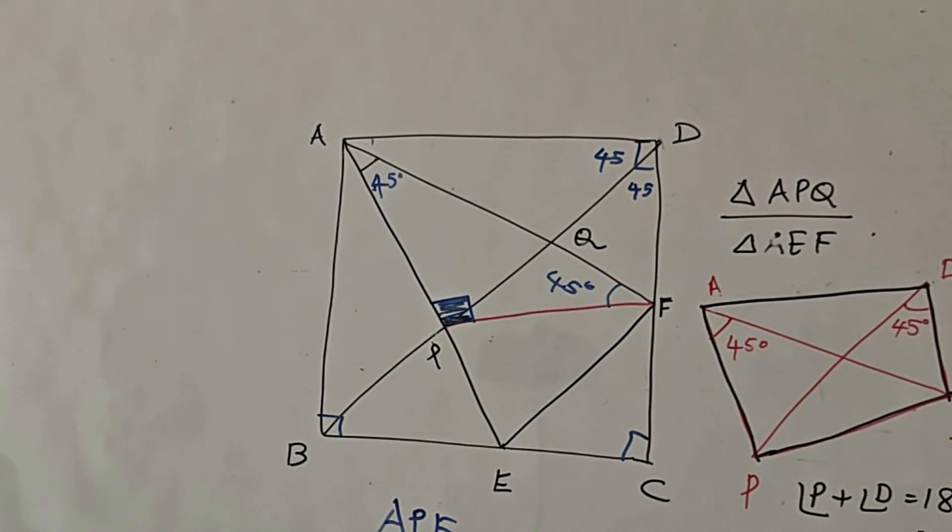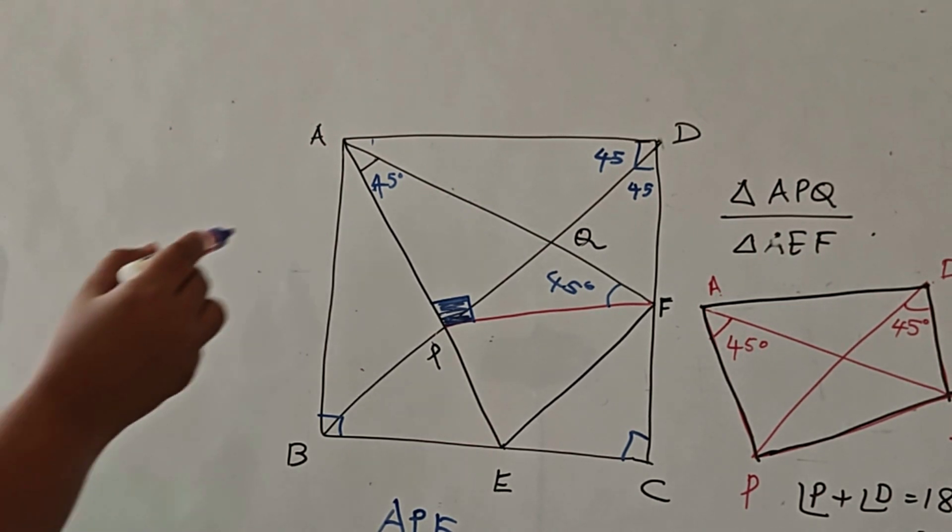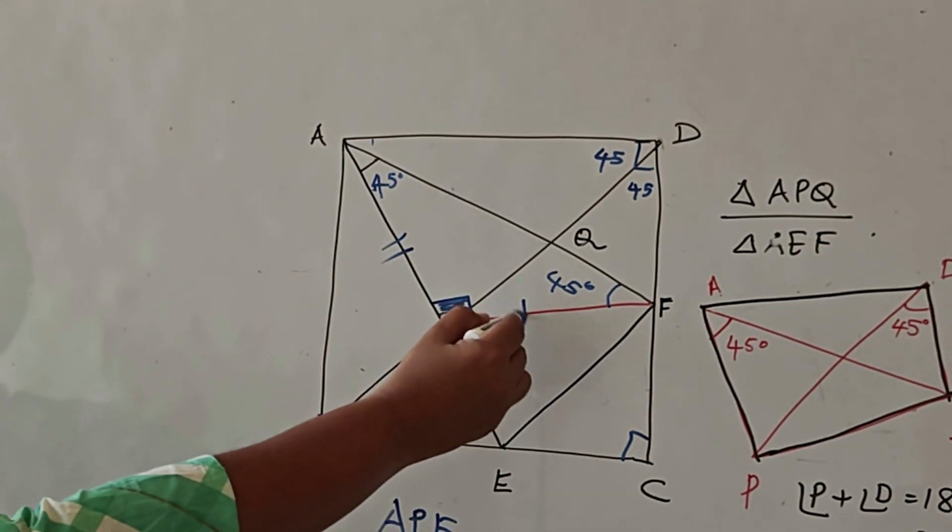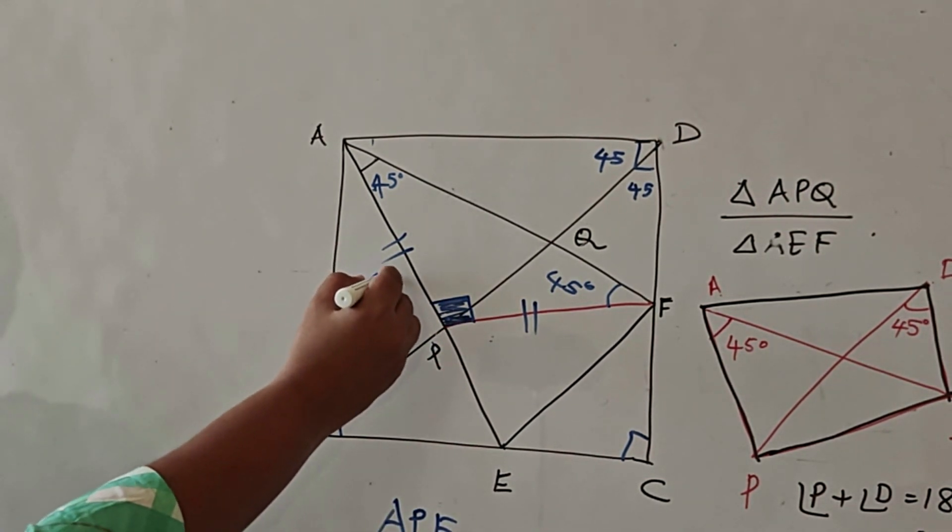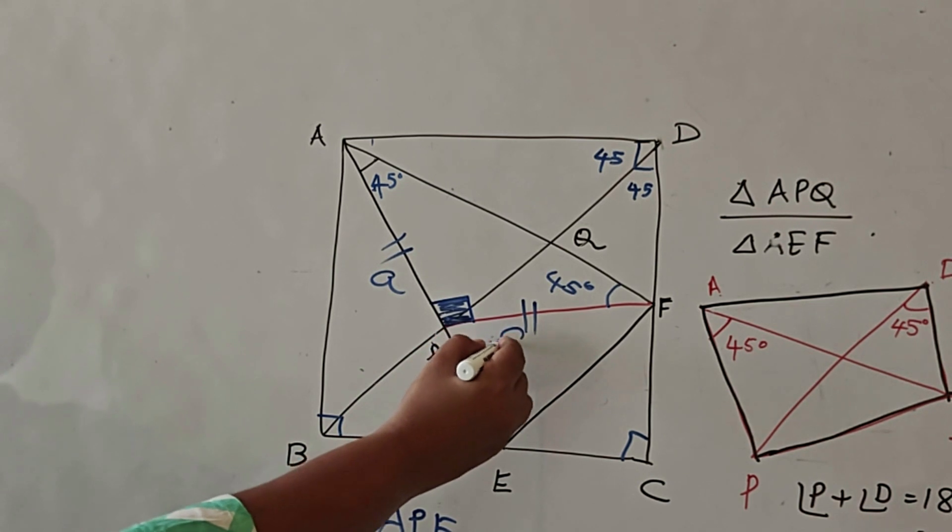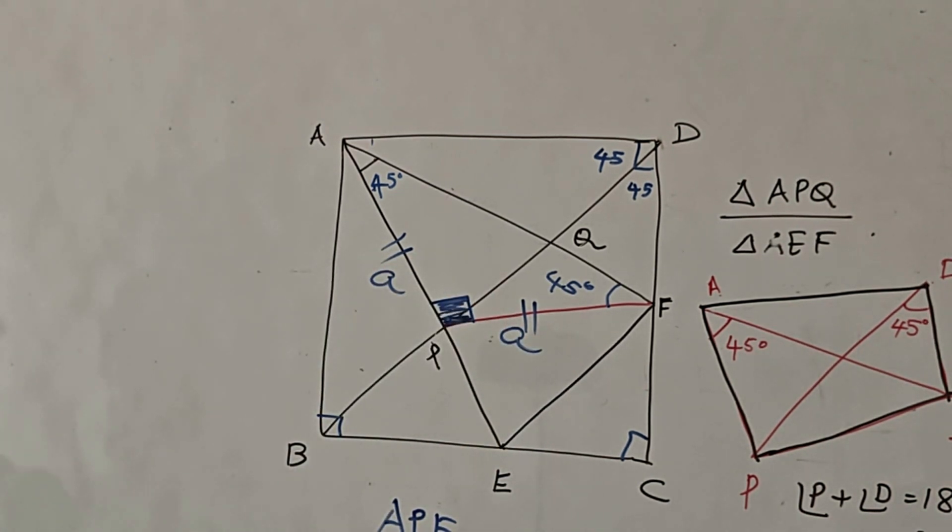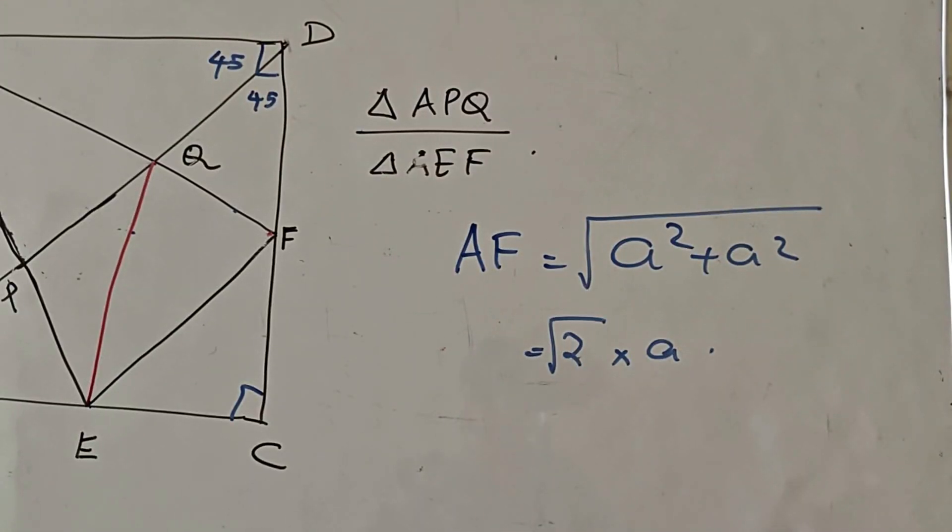APF has become an isosceles triangle where AP is equal to PF. If I am taking the measurement of AP as A, PF is also equal to A. Now, because it is a right angle triangle, right angle at the vertex P, I can find the measurement of AF by using the Pythagoras theorem. You can see that AF is equal to root 2 into A.